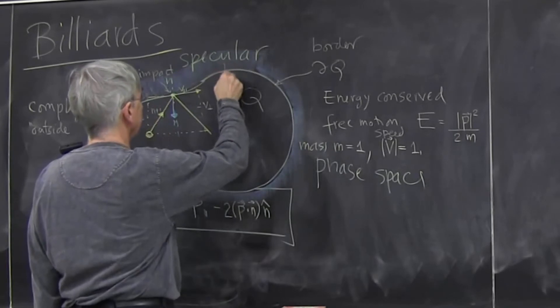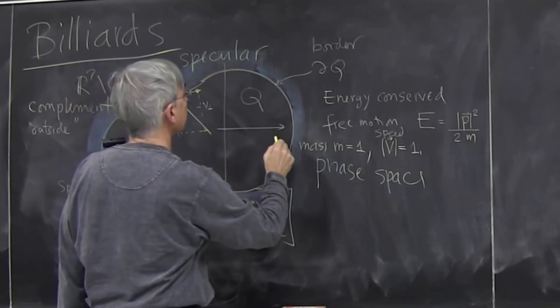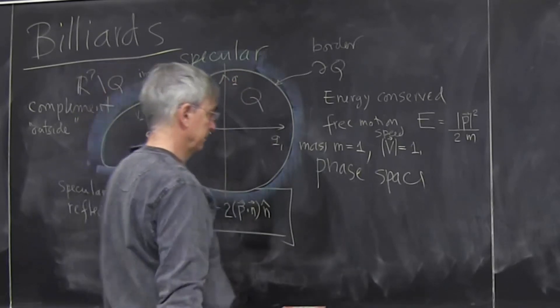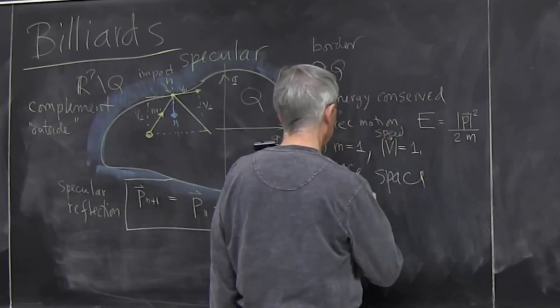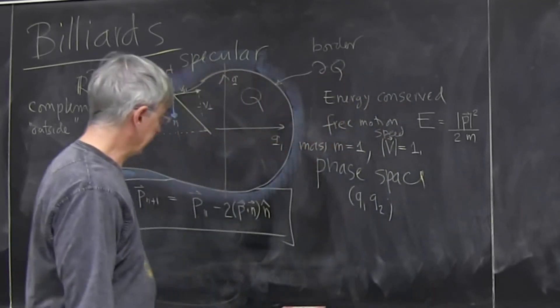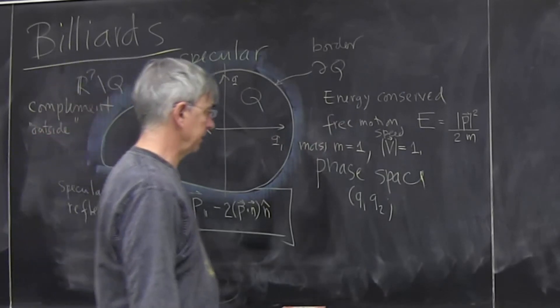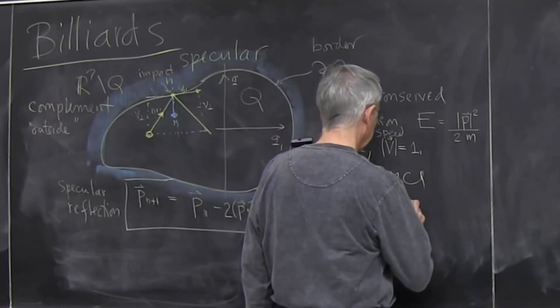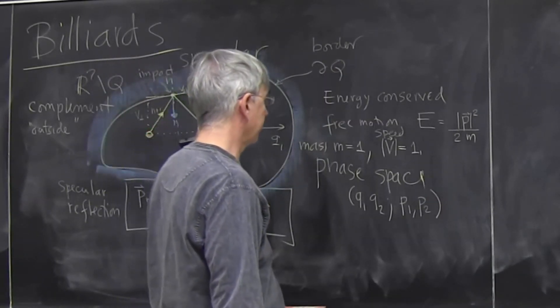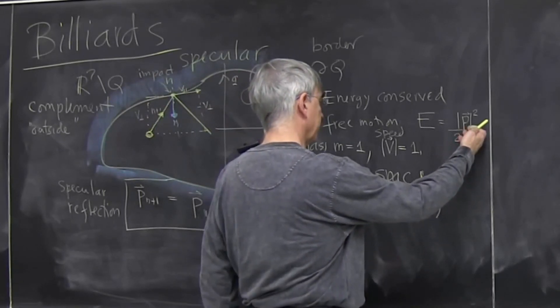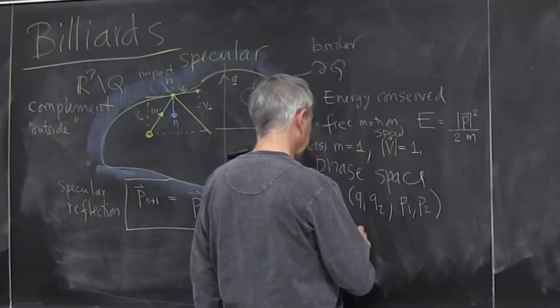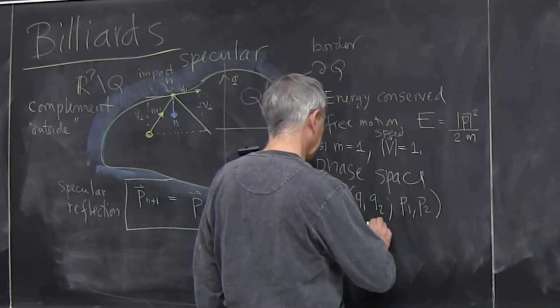In my coordinates is I'll have coordinate q1, q2, some place in this billiard, so q1, q2. And then we need to know the momenta to fully specify the state of the particle: p1, p2. But we have two constraints. One is that we have energy conservation, and the other one is that we have velocity conservation. Phase space is four-dimensional but dynamics is really two-dimensional.